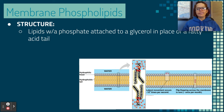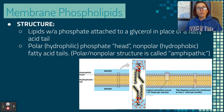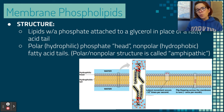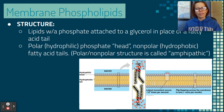Let's talk about the phospholipids themselves — this should be review from biochemistry. They are lipids with a phosphate attached to a glycerol in place of a fatty acid tail. Instead of triglycerides with three fatty acid tails, they have two fatty acid tails. They have a polar or hydrophilic water-loving phosphate head and nonpolar fatty acid tails. A new word: amphipathic — like an amphibian that can live both on land and in water. The polar and nonpolar areas of the phospholipid make it amphipathic.